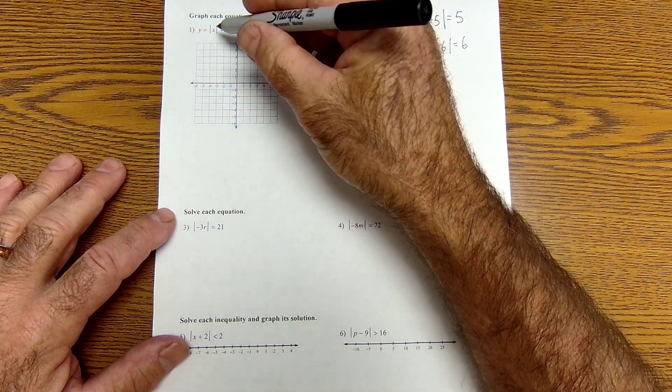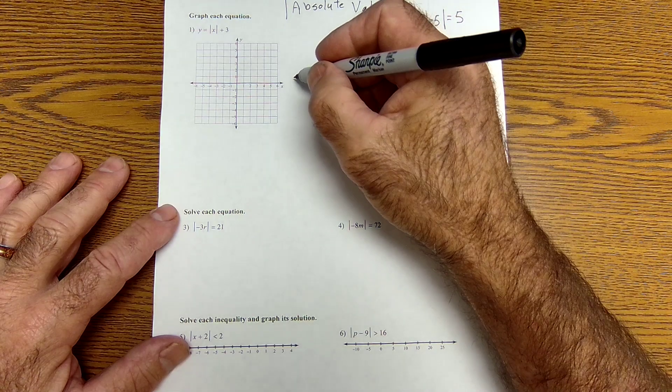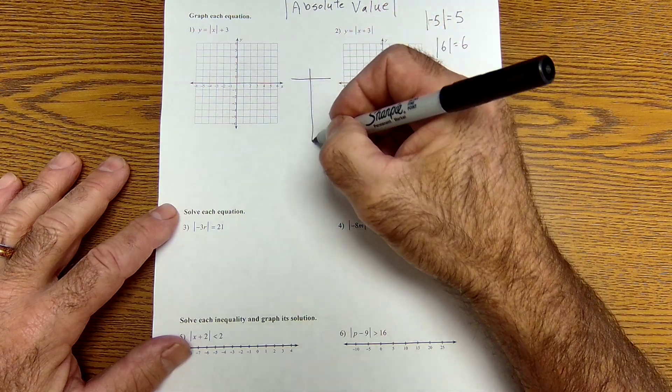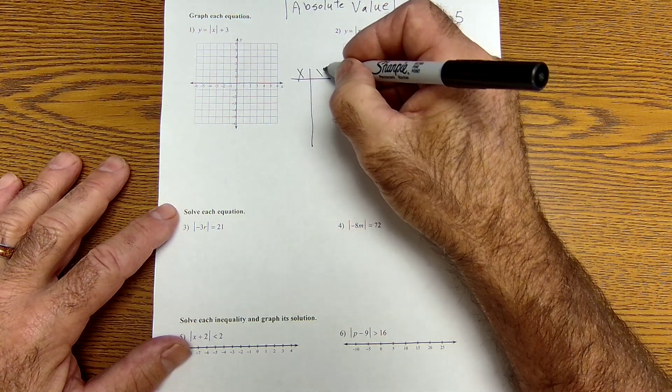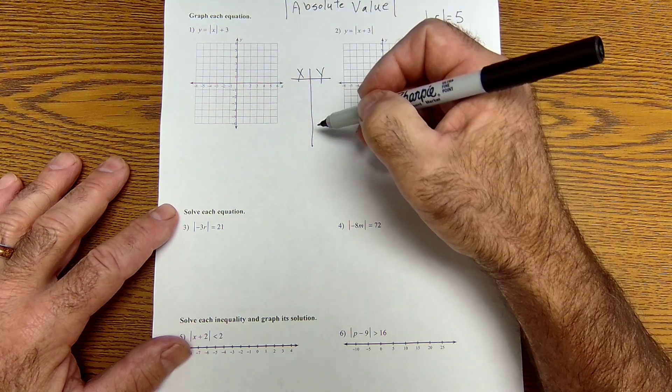So number one, I have y equals absolute value of x plus 3. And it says to graph. Whenever you don't know how to graph something, you always set up a t-bar, x and y. And you pick values for x, plug them in and find the values for y.